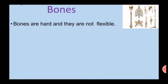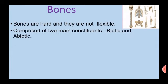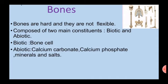Bones. All the bones in our body are not of the same shape — every bone is different. All the bones together form a framework or skeleton, which gives shape to the body. All the bones along with cartilage form the skeletal system. Bones are hard and not flexible. Bones are composed of two main constituents: biotic and abiotic. Bone cells are biotic, while calcium carbonate, calcium phosphate, minerals and salts are abiotic constituents of bones.